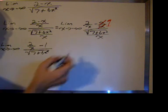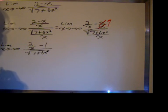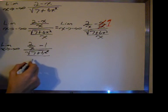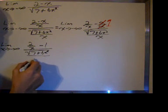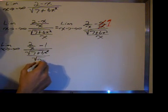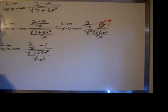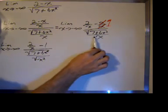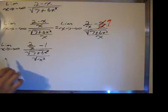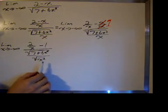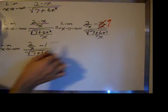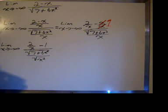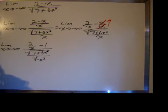Now I want to divide this x into the expression under the radical. In order to do that, I'm going to rewrite x as the square root of x squared. But notice I have changed the value of this function. As x approaches negative infinity, this x is a negative value, while the square root of x squared is positive. So at this point, these two expressions are not equal.